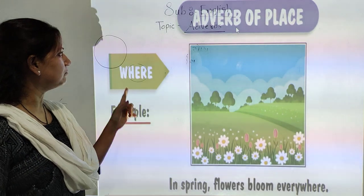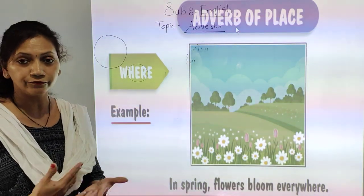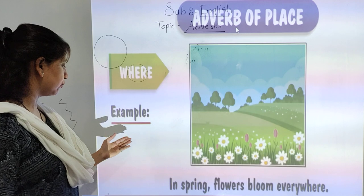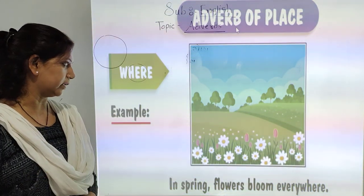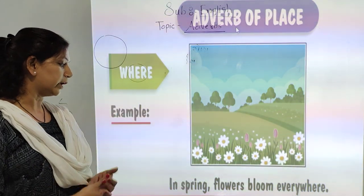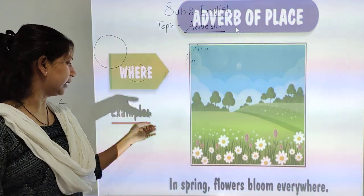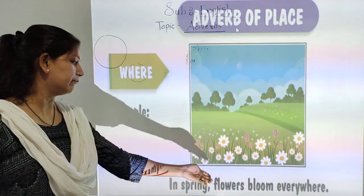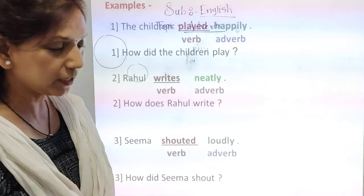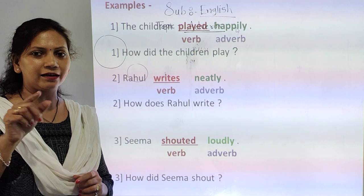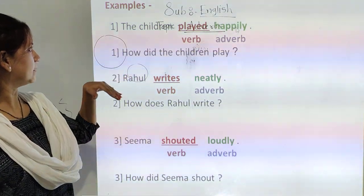The next example is adverbs of place — where? In spring, flowers bloom everywhere. Where do the flowers bloom? Everywhere. 'Everywhere' is an adverb of place. Today we are going to learn about adverbs. Let's see some more examples.